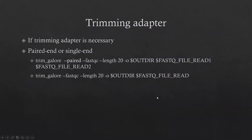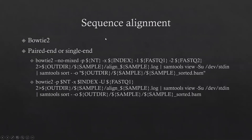Let's begin with the first step: trimming adapters. As you already know from RNA-seq data analysis, most software already removes adapters automatically, but sometimes you may still find adapters present. In our core, we use Trim Galore to remove adapters for either paired-end or single-end ChIP-seq. Then we use Bowtie2 to align the sequences to the reference genome — either mouse, human, or any species — with different commands for paired-end or single-end data.